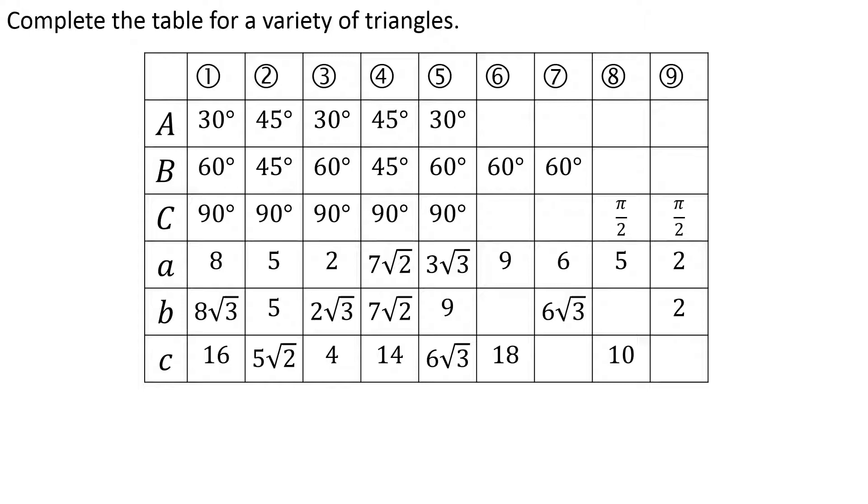I only see one angle on number 6, but I know it has to be a 30-60-90 because side a is exactly half of side c. So I know it's a 30-60-90, and since the short leg is 9, the long leg is 9√3.